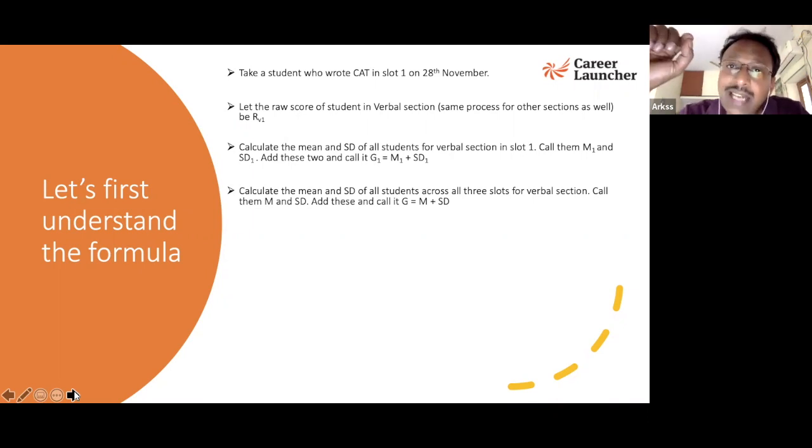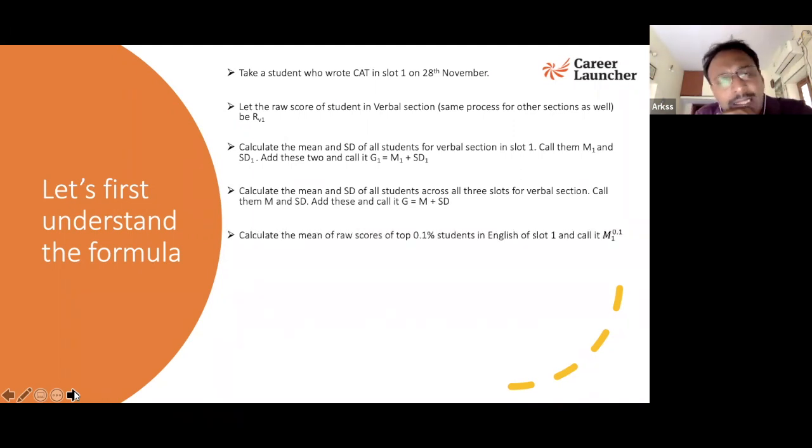Now what they do is they calculate the mean and standard deviation of all the two lakh students. Let's say the first slot has only 65,000 students. They calculate the mean and SD, the standard deviation. Then they calculate the mean and standard deviation of all the scores, doesn't matter which slot you've written. Call it G, M plus SD, where M is the mean of all the three slots put together, SD is all the standard deviations put together.